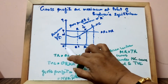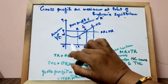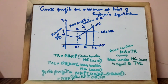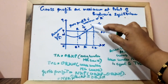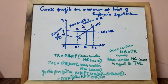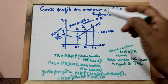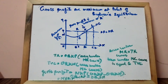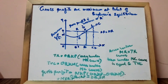Gross profit is the area NKP. How do you get it? OQKP minus OQKN. So the difference between TR and TVC is maximum at point K. At any output below or above K, profits would be lesser. We have to prove that NKP is the maximum gross profit.